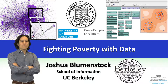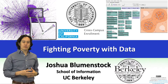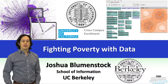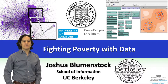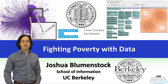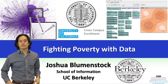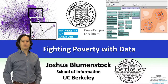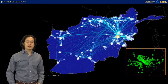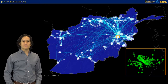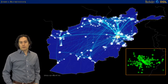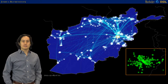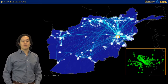The work I do and that my lab does — and this is really an emerging field right now — is thinking about how you can use new sources of data and new methods to better understand the causes and consequences of poverty. A lot of this work is based in developing and conflict-affected countries, but you can also do this work in the United States and anywhere there's poverty.